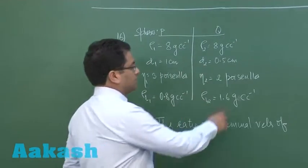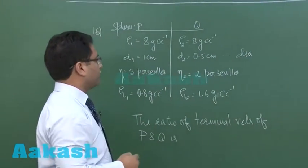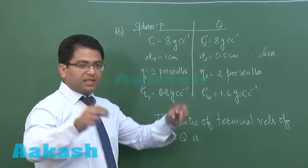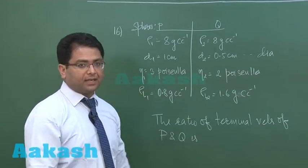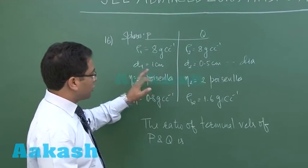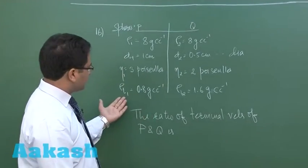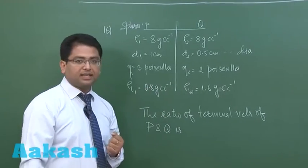The diameter of the spheres are given here: 1 centimeter and 0.5. The spheres are dropped in liquid, and the liquids have coefficient of viscosity 3 poiseuilles and 2 poiseuilles, and the liquids have the density in this manner which is very clear.